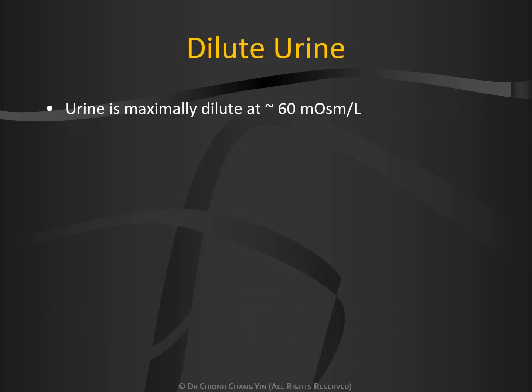On the other hand, the most dilute urine that a normal person can ever make is in a range of 60 milliosmol per liter.